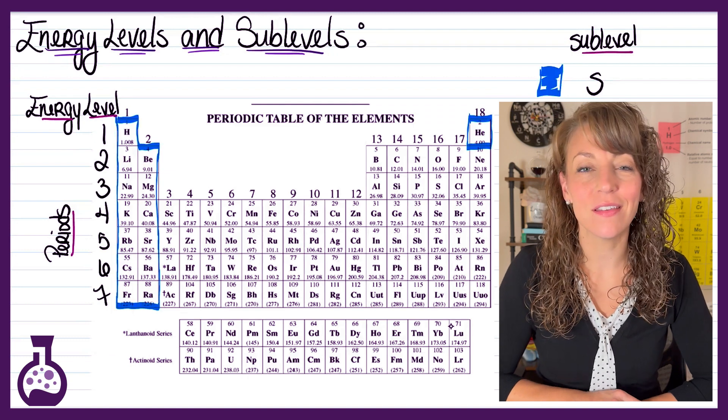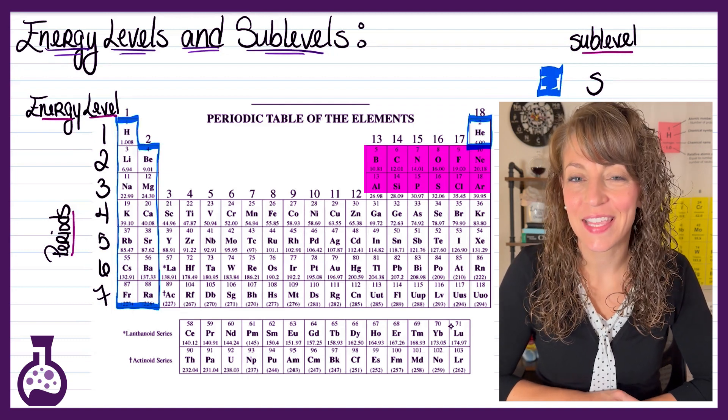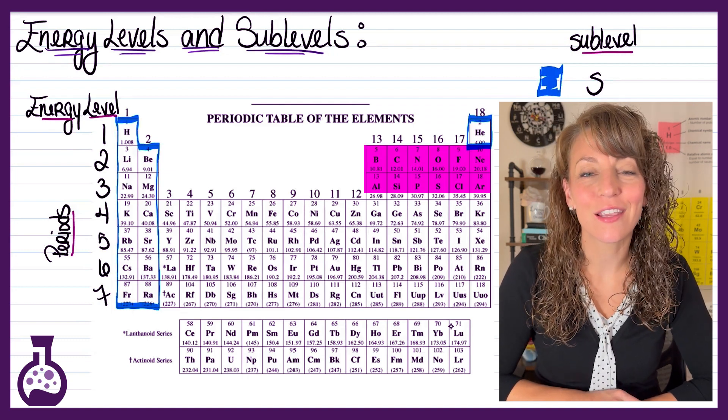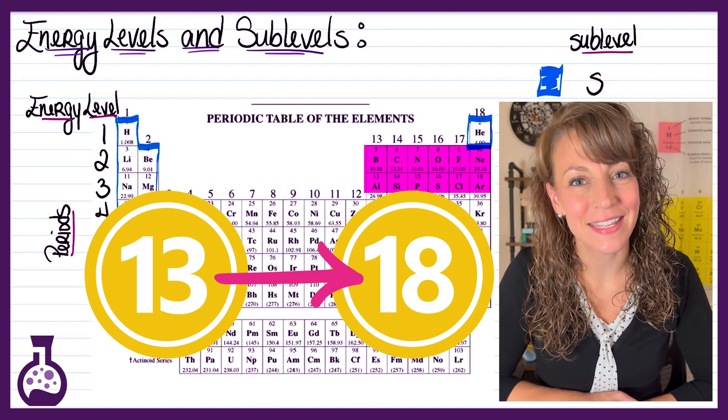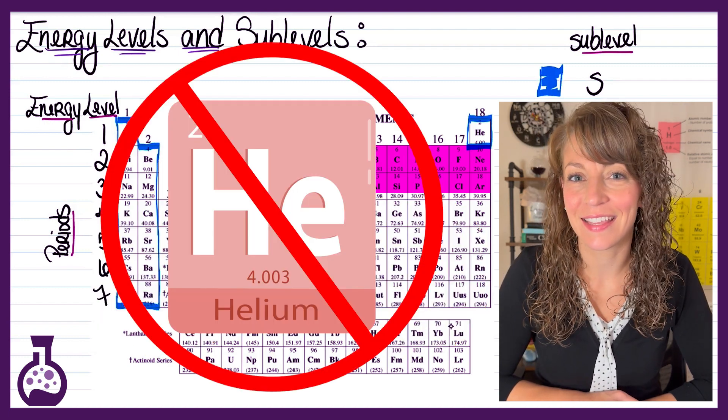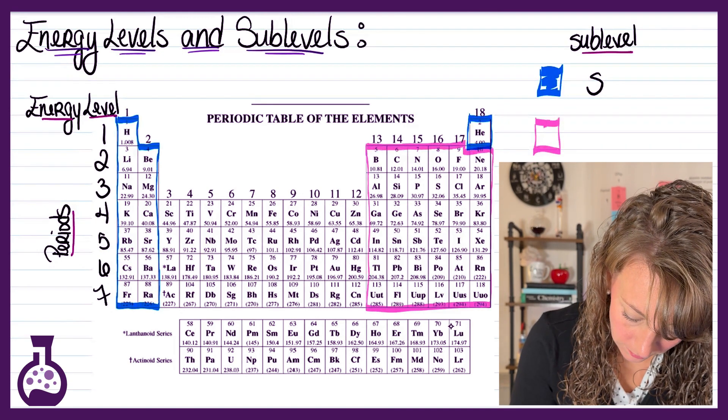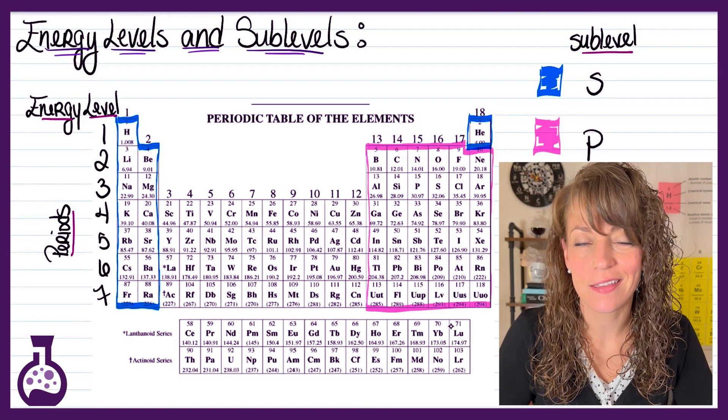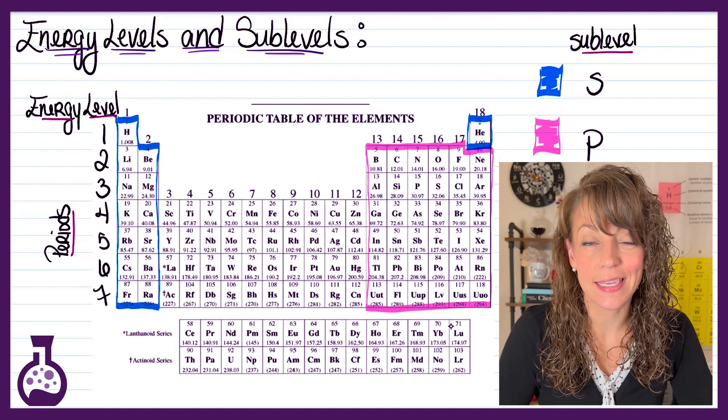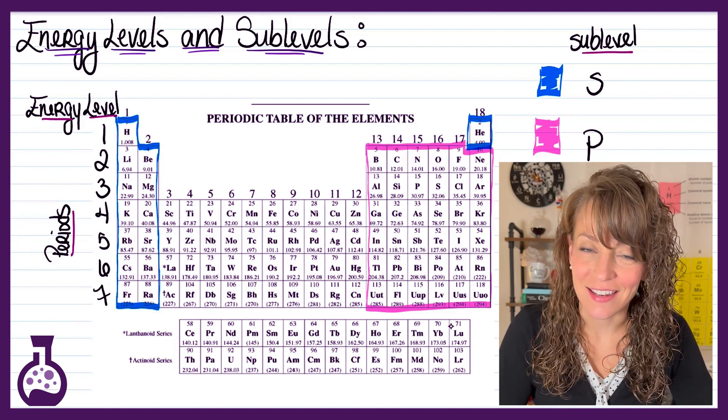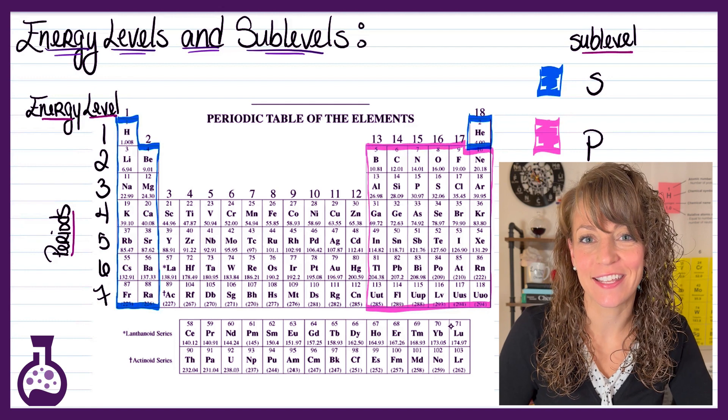The next sublevel is your p sublevel. This is going to be located in groups 13 through 18, excluding helium. So these elements will have valence electrons that fall within a p sublevel within the energy level they're located in.